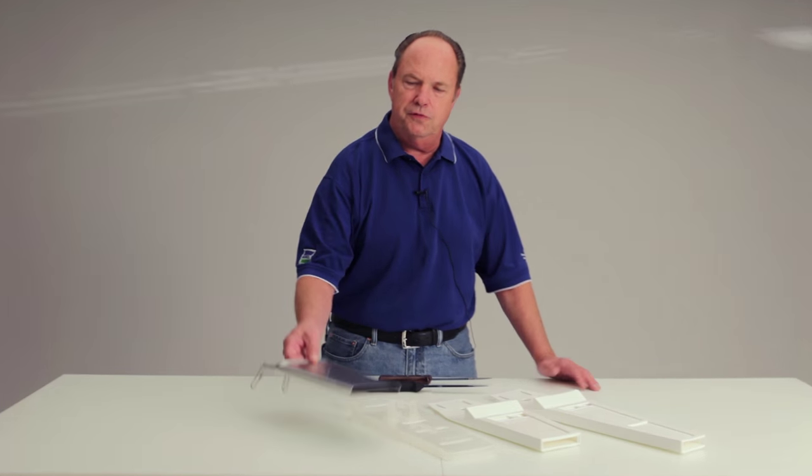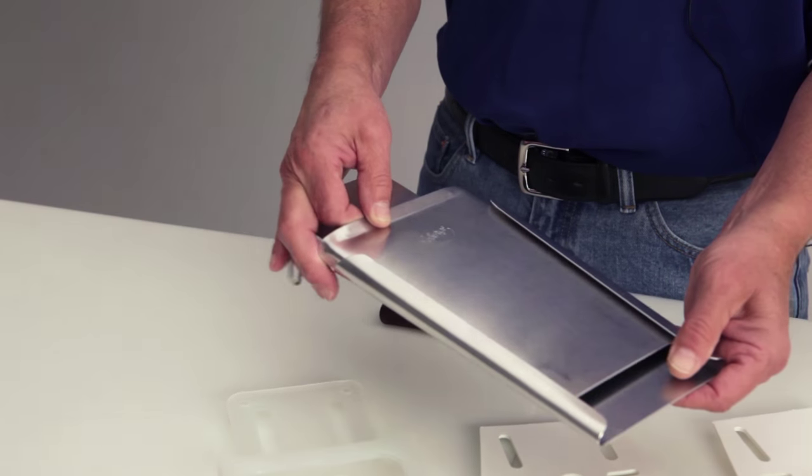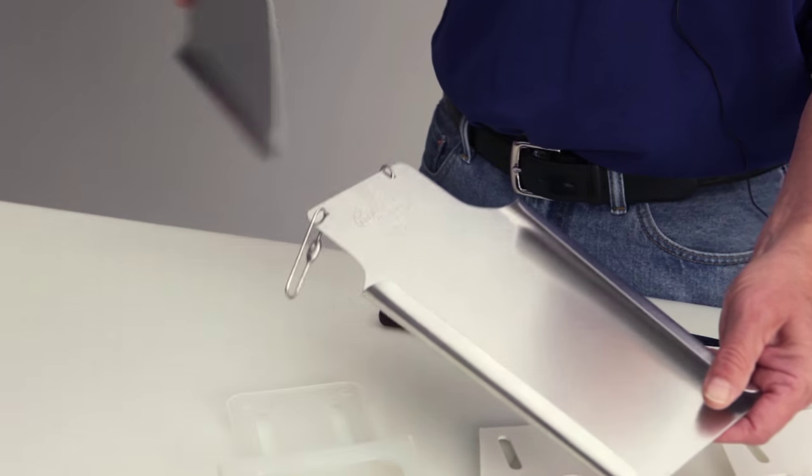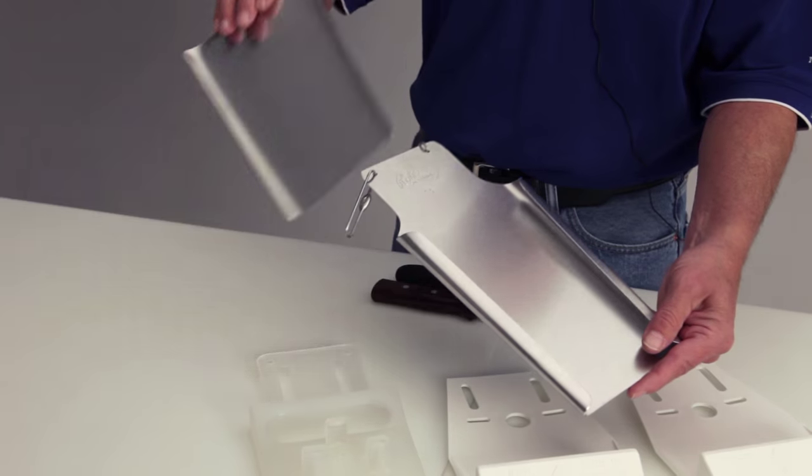You're familiar with this, you've seen it in the industry for a long time. One of the main features of the aluminum scabbard is the removable front. The front of the scabbard is easy to pull out, and when you do that, it makes it a lot easier to clean inside.